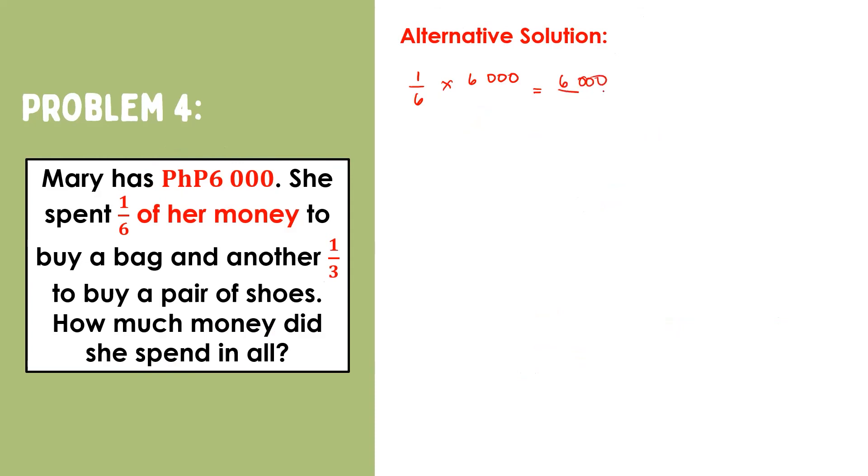So, we will have one-sixth times six-thousand. That will give us six-thousand over six or one-thousand. On the other hand, one-third of six-thousand is equal to six-thousand over three or two-thousand.